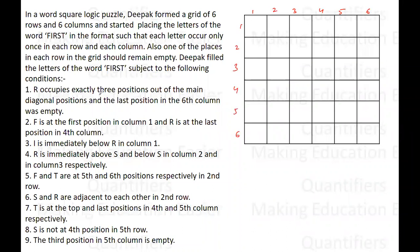The first point says R occupies exactly three positions out of the main diagonal, and the last position in the sixth column is empty. The main diagonal means positions 1,1 — 2,2 — 3,3 — 4,4 — and 5,5, running along this diagonal.